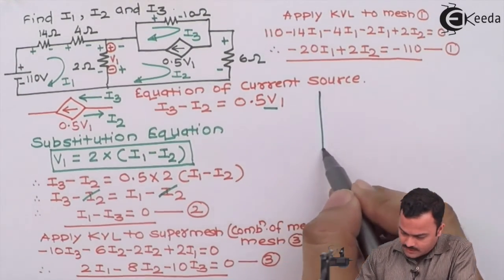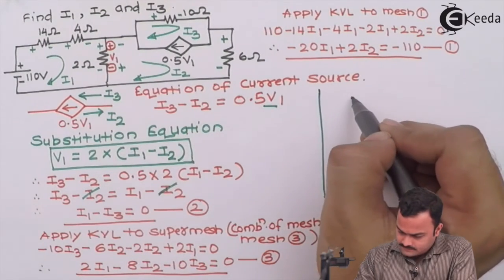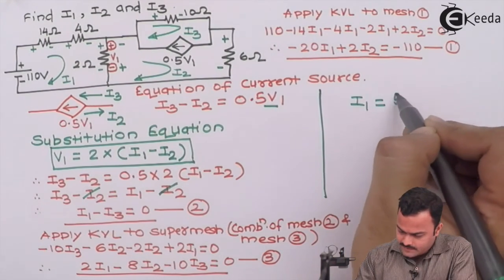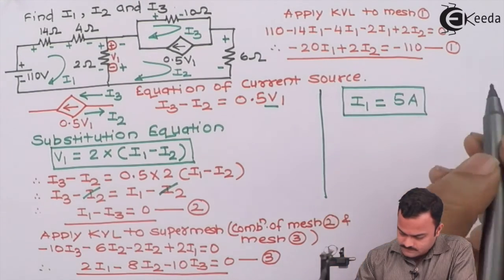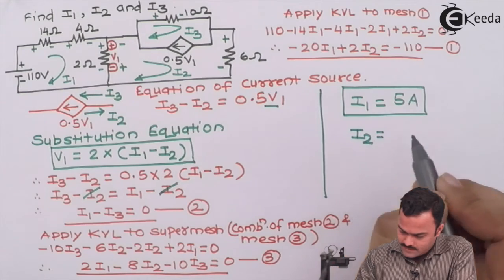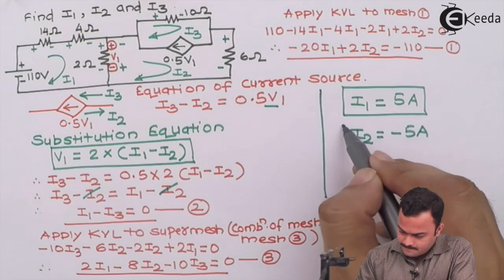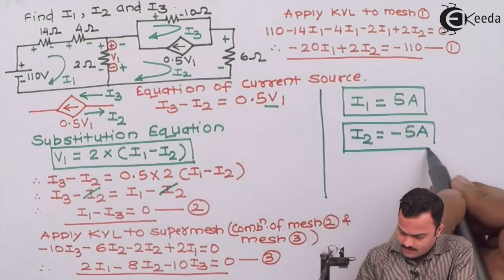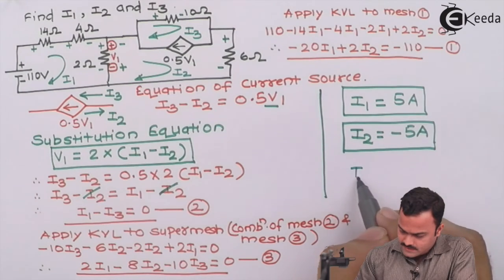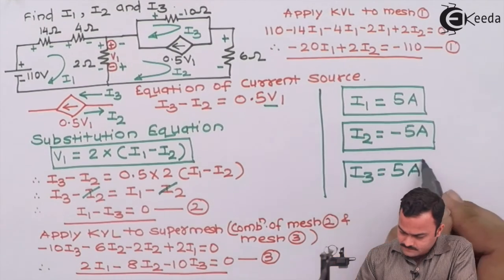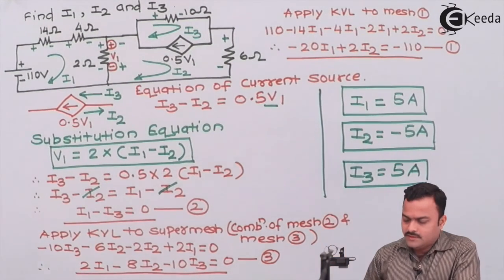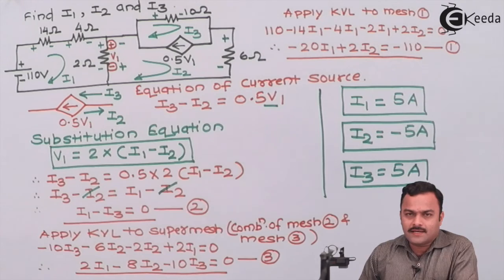With three equations and three unknowns, we can solve to get: i1 equals 5 amperes, i2 equals minus 5 amperes, and i3 equals 5 amperes — the same as i1. We have solved the problem where a current source is present between two meshes by applying the concept of supermesh analysis.